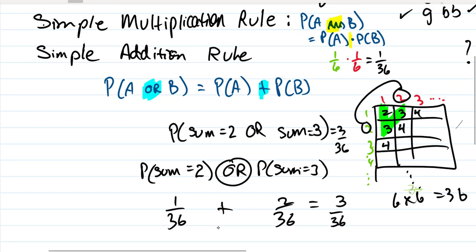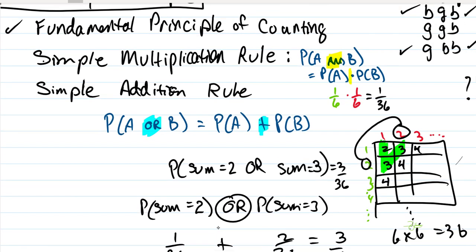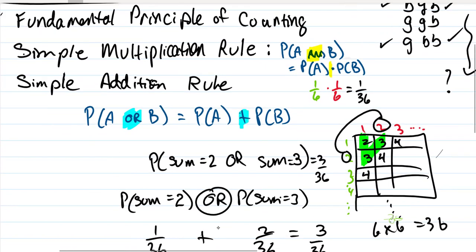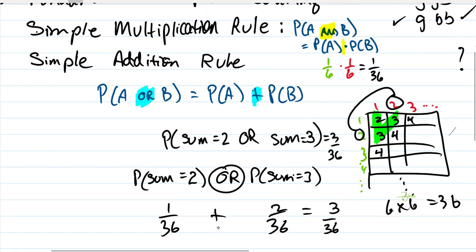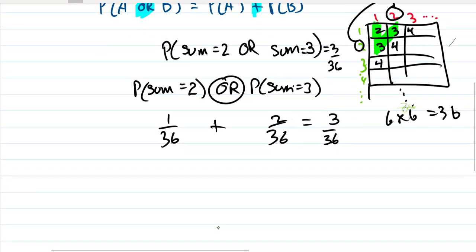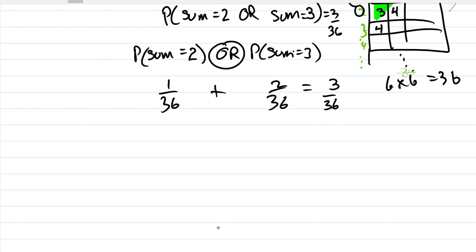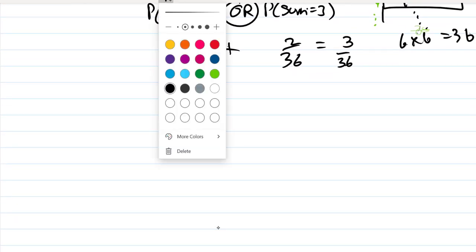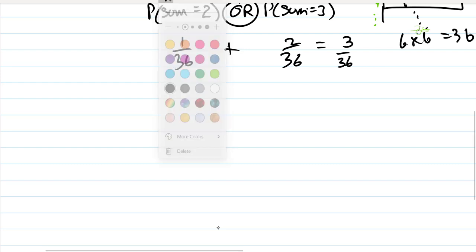Those were the basic rules we looked at: the fundamental principle of counting, the simple multiplication rule, and the simple addition rule. For the fundamental principle of counting, we found it convenient to use a branch graph — essentially a tree diagram.